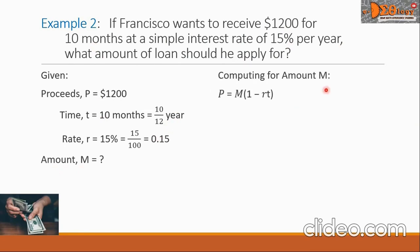Going to our formula, we are now to compute the amount M, and the same formula we are going to use. P equals M times the quantity 1 minus RT. Doing the substitution now, we will have the P now becomes 1,200. M is what we want to know. 1 is a constant, then minus the product RT. R now becomes 0.15 times the time, that is 10 over 12.